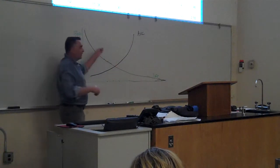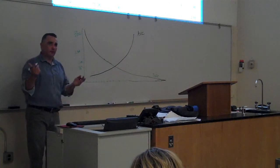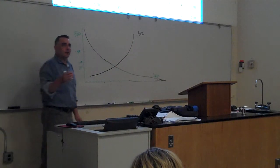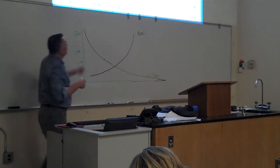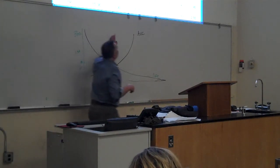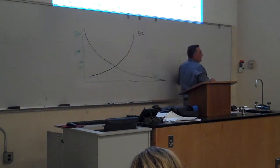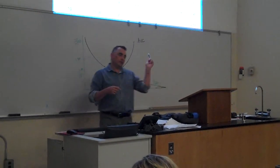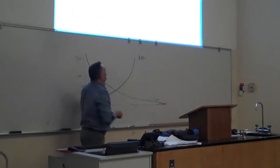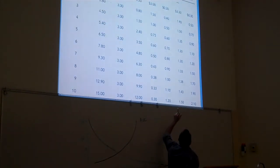Last but not least, minus one more, the second to last one is the average total cost. Average total cost is total cost divided by units of output, just like the other two. But it has a property that is a little bit different.